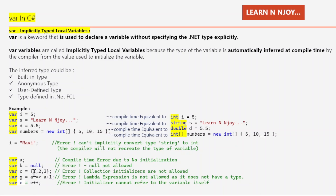Similarly, var c = {1, 2, 3} — assigning a collection initializer to a var variable is not allowed. var g = a => a + 1 — assigning a lambda expression to a var variable is not allowed because the lambda expression does not have a type. So whenever we declare a variable with the var keyword, we need to keep some rules in mind: declare and initialize at the same time; the inferred type could be built-in, anonymous, user-defined, or from the .NET FCL; and once assigned a type, reassigning a different type will throw an error.